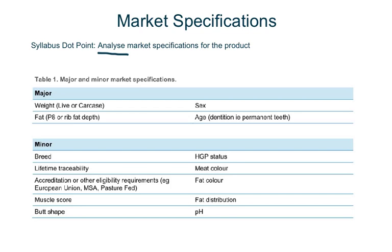The minor specifications are usually for particular markets. These include breed, lifetime traceability — which all cattle have now due to the NLIS scheme — and accreditation, so whether they're eligible for the European Union, MSA (Meat Standard Australia), or whether they're pasture-fed or grain-fed. Also included are muscle score, butt shape, HGP status (hormone growth promotants), meat colour and fat colour, which have been covered in a previous lesson.